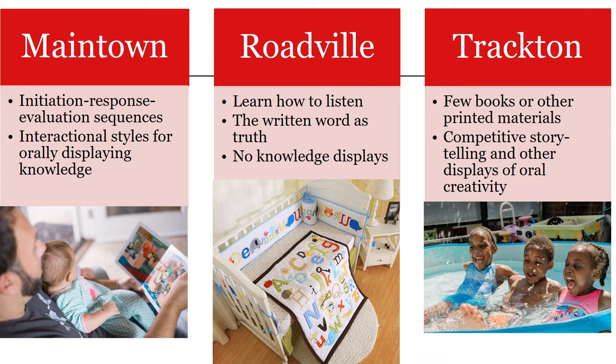The first group she studied are white middle-class families, whom she calls Maintown-ers. These people engaged in book reading with their babies and toddlers from a very young age and long before the children knew how to read themselves. These children, before they knew how to read, learned how to take knowledge from books and how to interact with others in the process. They were engaged in initiation-response-evaluation sequences — familiar to any teacher — and already as toddlers, Maintown children learned interactional styles for orally displaying the know-how of their literate orientation to the environment, which stood them in really good stead once they arrived in school.